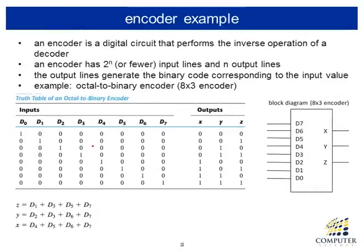For example, if we have an 8-by-3 encoder, the block diagram shows eight inputs and three outputs. The precondition of the encoder is that only one of the inputs is one — we cannot have two inputs simultaneously being one. The output then produces a three-bit binary number indicating which input is one. Considering d0 as the least significant position and x as the most significant position of the output.